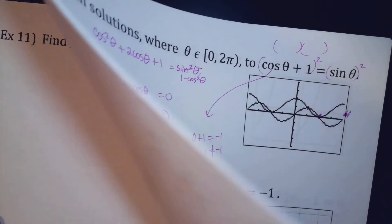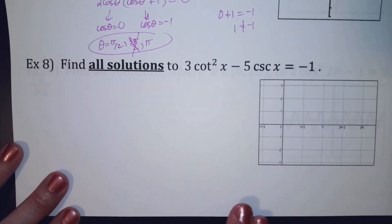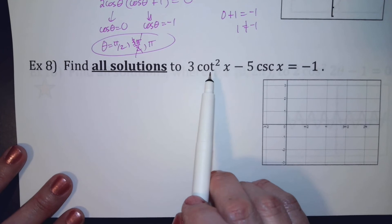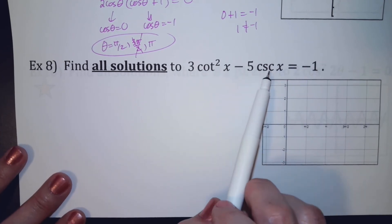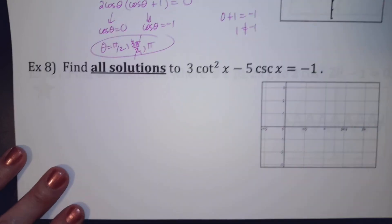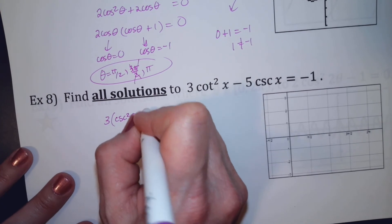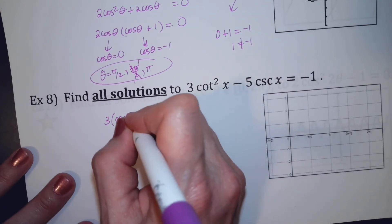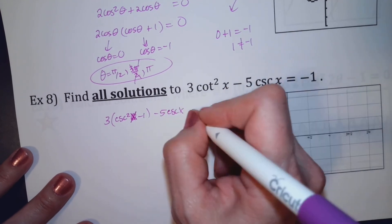Almost done. Find all the solutions here. So cotangent squared, cosecant — can't deal with those together; I can't factor them. I can't change cosecant, but I can change cotangent squared: cotangent squared is cosecant squared minus 1. So I get 3(cosecant squared minus 1) minus 5 cosecant equals negative 1.